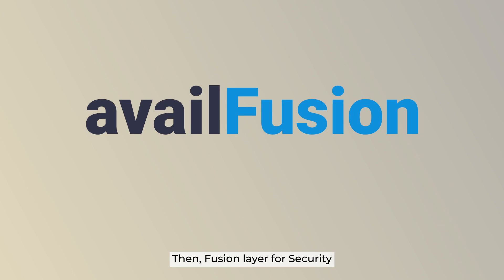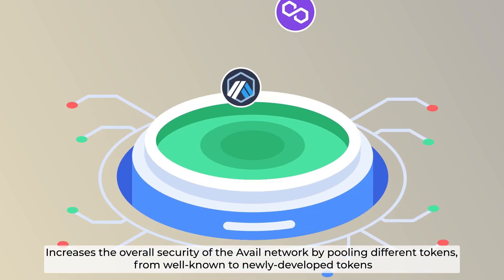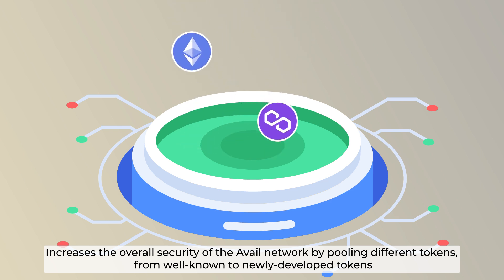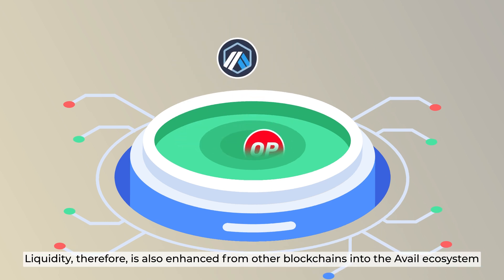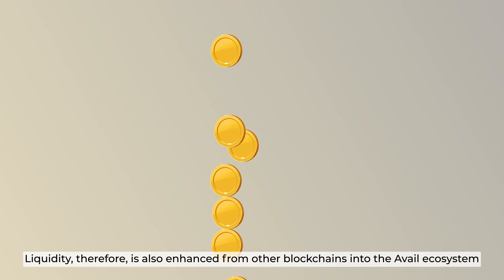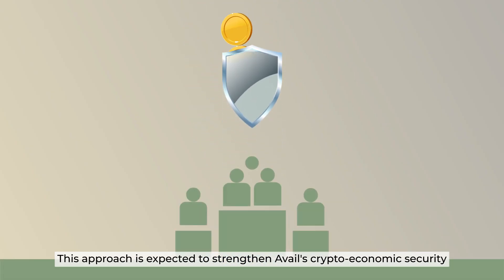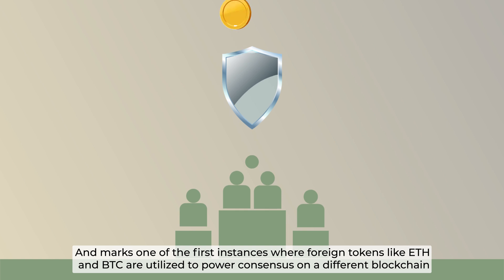Then, the Fusion layer for security increases the overall security of the Avail network by pooling different tokens, from well-known to newly developed tokens. Liquidity is therefore also enhanced from other blockchains into the Avail ecosystem. This approach is expected to strengthen Avail's crypto-economic security and marks one of the first instances where foreign tokens like ETH and BTC are utilized to power consensus on a different blockchain.